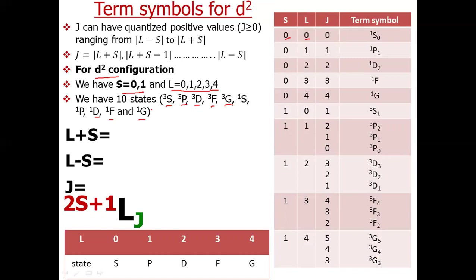Let me work through one example. For S = 1, L = 1: L+S = 2 and L−S = 0, so J = 2, 1, or 0, giving term symbols 3P2, 3P1, and 3P0.